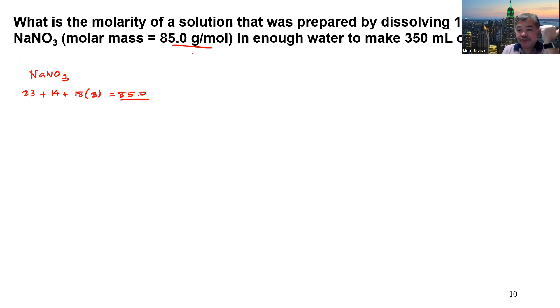So in case 85 grams per mole is not given, you have to do it. Now, once you have it, we can get 14.2 grams divided by 85.3 grams per mole. Because what we need is just moles over liter solution.